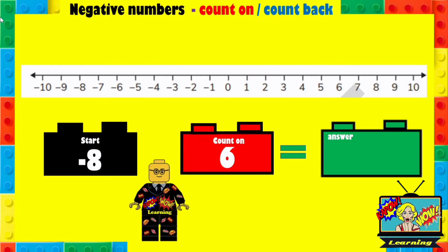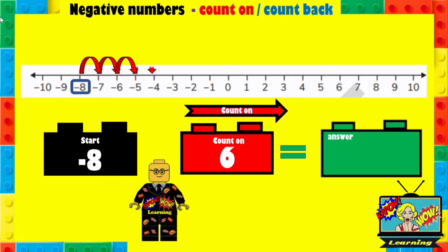Here's another one. We start at minus 8 and this time we're going to count on 6. What is the answer? You can pause it and then play it to see if you got it correct. So we start at minus 8, highlighted there. We're counting on, which means we move to the right 6 places: 1, 2, 3, 4, 5, 6. So your answer should have been minus 2.